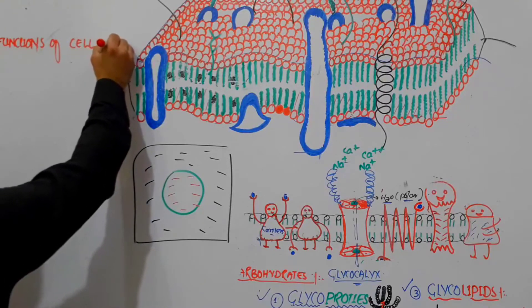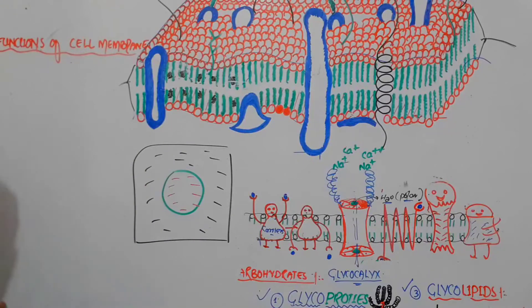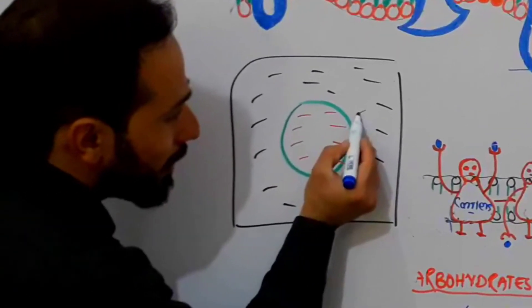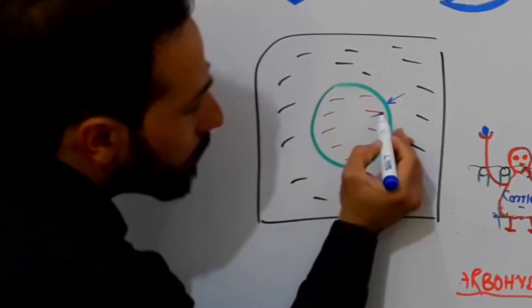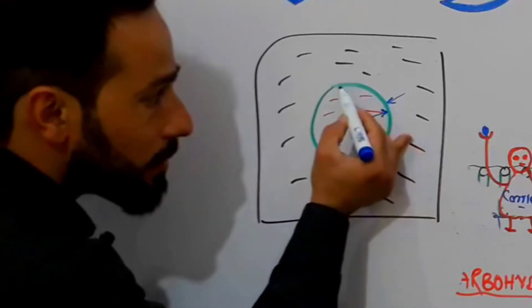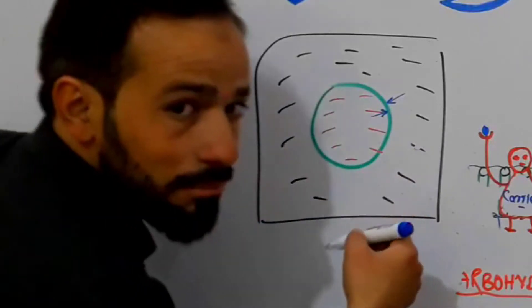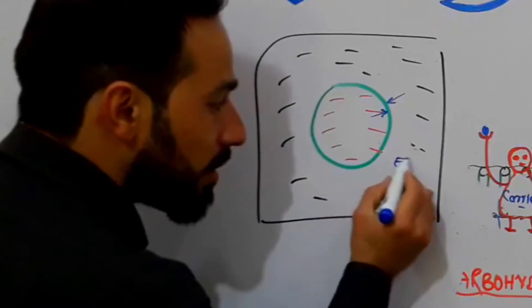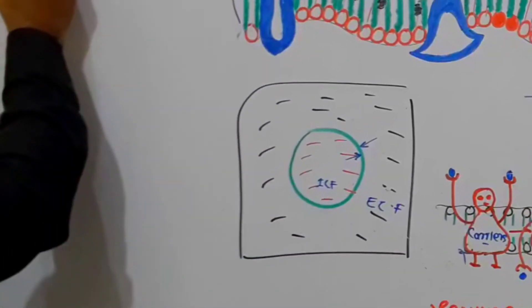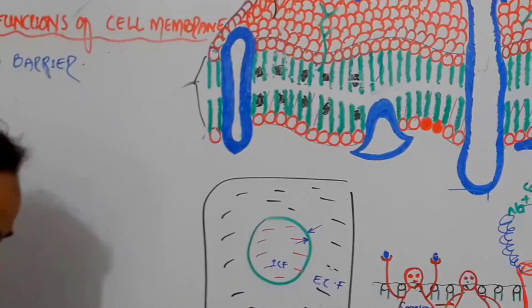The first and most important function is that the cell membrane acts as a barrier. Nothing without permission can go inside the cell, and nothing without permission can get out. Whenever anything is going in and out of the cell, it must take the permission of the cell membrane. So the cell membrane is a barrier between extracellular fluid and intracellular fluid.